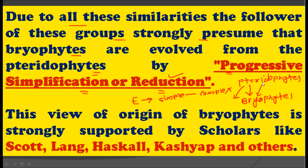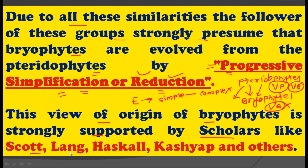Pteridophytes are vascular plants with their own vascular bundles. But bryophytes do not show any presence of vascular bundles. The pteridophytean hypothesis group suggests that during evolution, by progressive simplification or reduction, bryophytes evolved from pteridophytes. This view is strongly supported by scholars like Scott, Lang, Haskell, Keshav, and others.